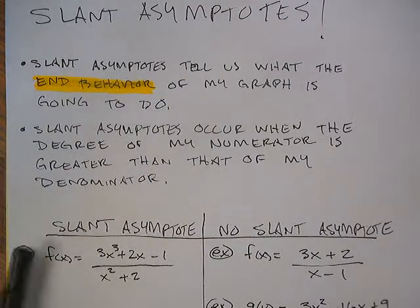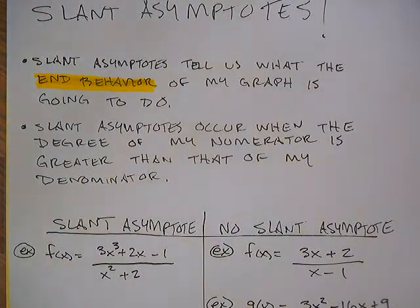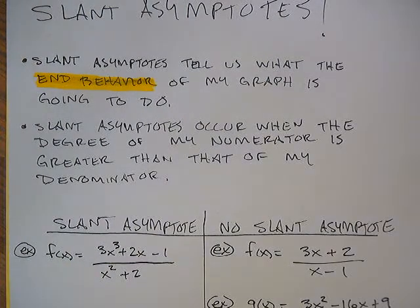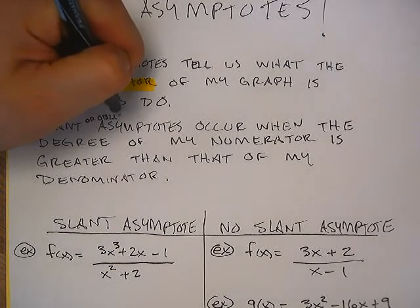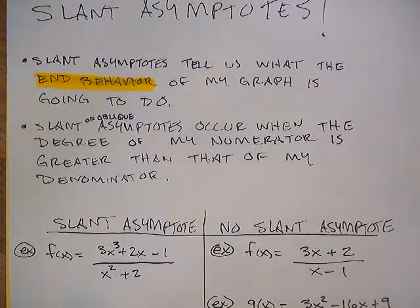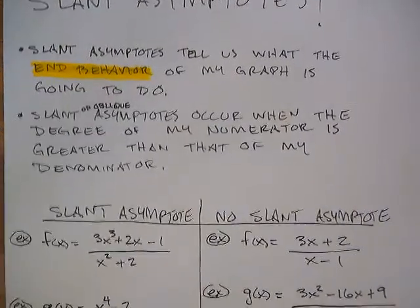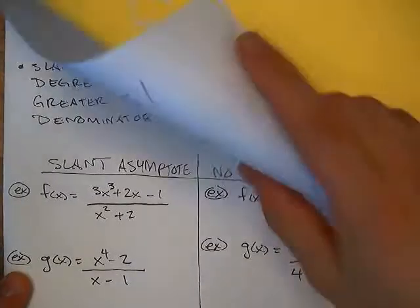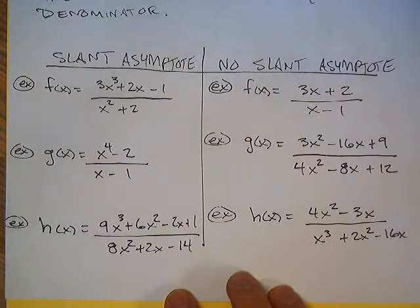So slant asymptotes occur when the degree of the numerator is greater than that of the denominator. When the numerator degree is greater than the denominator degree, you're going to end up with a slant asymptote. Sometimes they're called oblique asymptotes, so slant or oblique asymptotes occur when the degree of the numerator is greater than that of the denominator. Let's take a look at a couple of examples here — all we're doing is trying to determine whether or not we're going to have a slant asymptote.